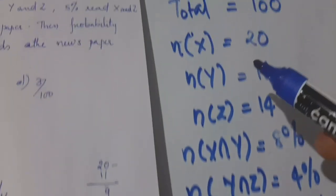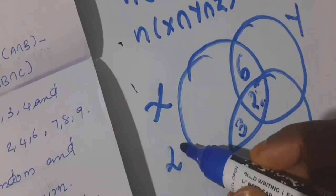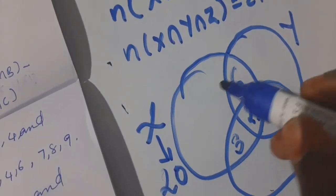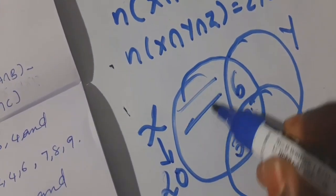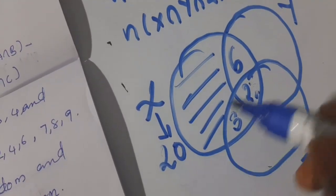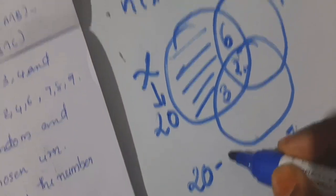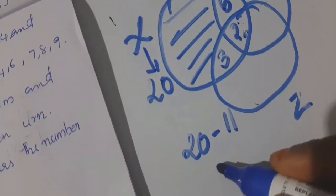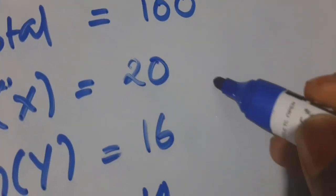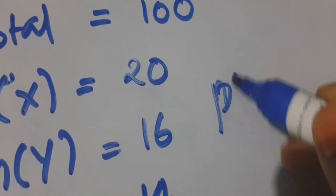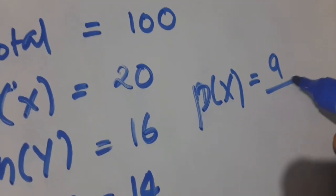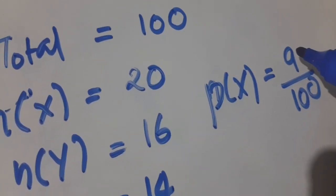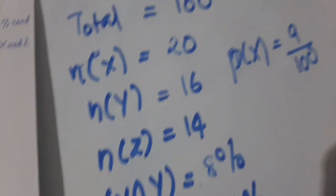We have n(X) = 20. Subtracting all shared regions from X gives X only = 20 − 11 = 9. So the probability of reading X only is 9/100. The answer is 9/100.